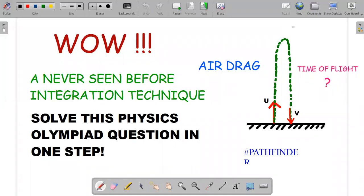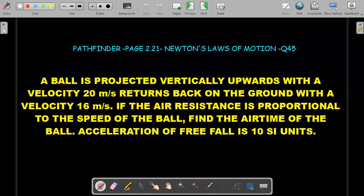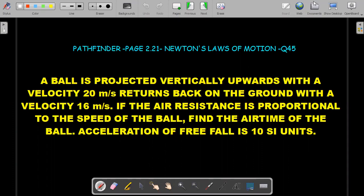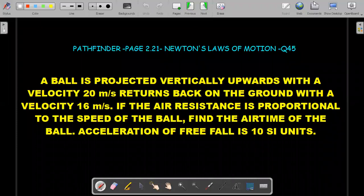So without much further ado let me share the wording of the question with you. This is the actual question given from the Pathfinder. A ball is projected vertically upwards with a speed of 20 meter per second and returns back to the ground with a speed of 16 meter per second. The air resistance presence makes sure that the speed actually reduces. The air resistance is proportional to the speed of the ball.